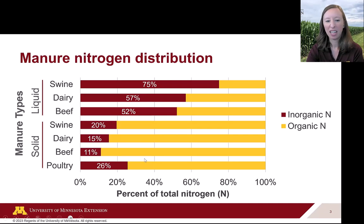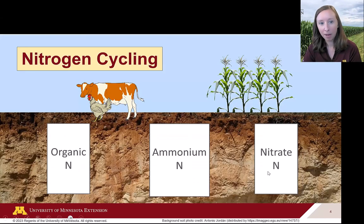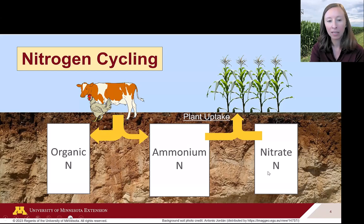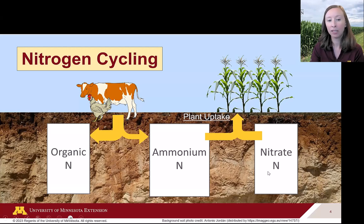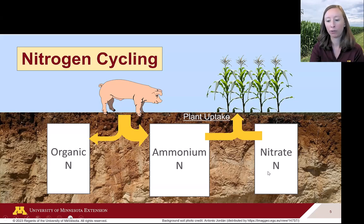Dairy and beef are roughly 50/50, maybe slightly over, and swine is actually more like 75% ammonium. It's important to know the difference between liquids and solids, and especially dairy versus swine. With solid poultry manures, there's a much lower concentration of ammonium — most of the nitrogen is in the organic form. Cattle and poultry tend to have a higher proportion in the organic nitrogen form, whereas swine tends to have more ammonium nitrogen.